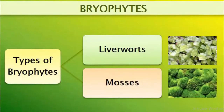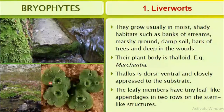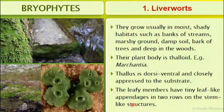What are the two types of bryophytes? They are divided into two: one is liverworts and the other is mosses. First, liverworts. They grow usually in moist shady habitats such as banks of streams, marshy ground, damp soil, bark of trees, and deep in the woods. Their plant body is thalloid. Example: Marchantia. The thallus has a dorsal side and a ventral side, and they are appressed to the substratum. The leafy members have tiny leaf-like appendages in two rows on stem-like structures.